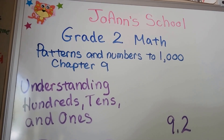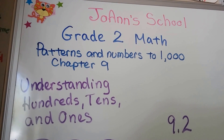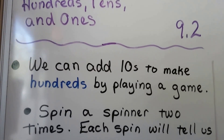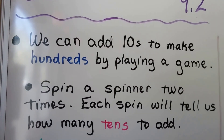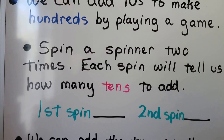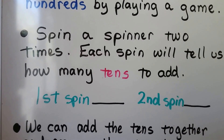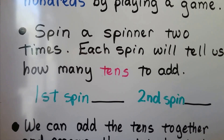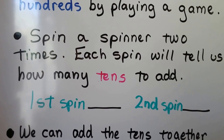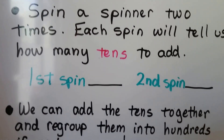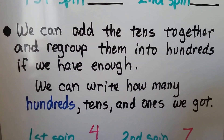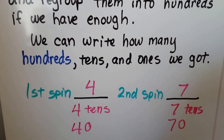Understanding hundreds, tens, and ones — lesson 9.2. We can add tens to make hundreds by playing a game. We spin a spinner two times, and each spin tells us how many tens to add. We write down the first spin, spin again, write down the second spin, then add the tens together and regroup them into hundreds if we have enough.